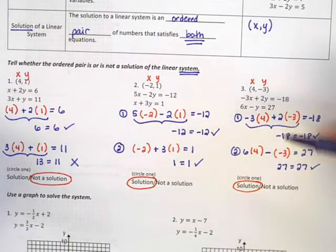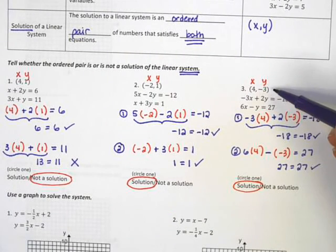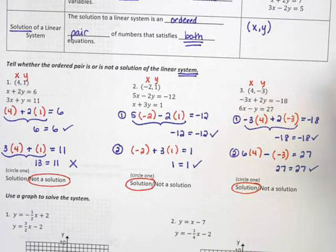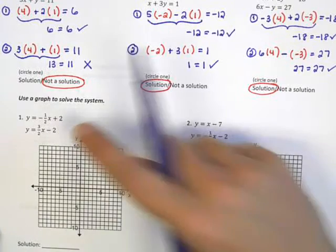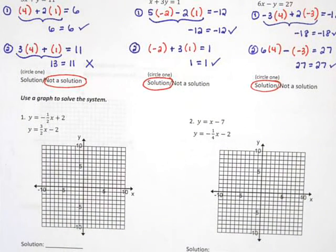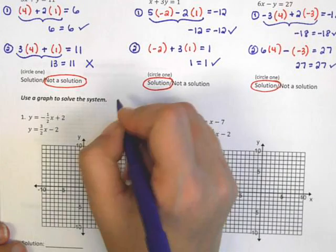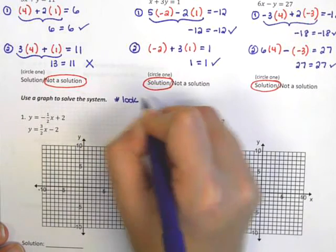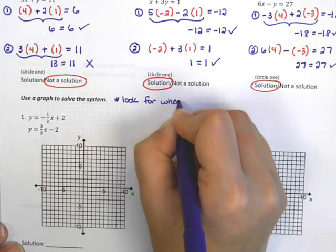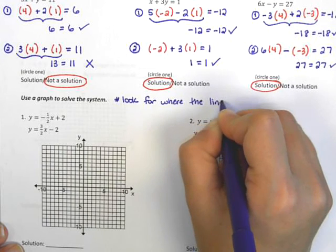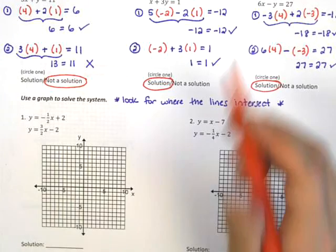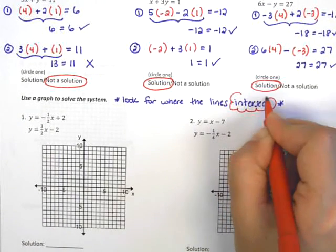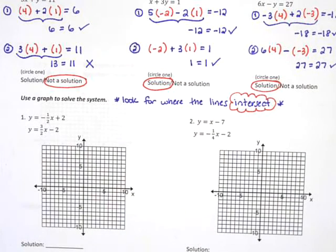Now, this is how we check whether our solution is or is not correct. But how would you actually find this ordered pair in the first place? Finding the solution using a graph means looking for where the lines intersect. To identify the ordered pair that works for both equations, we are looking for the place on the graph where these lines intersect each other.